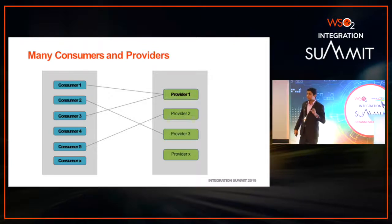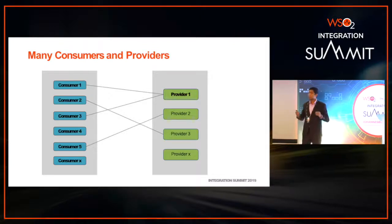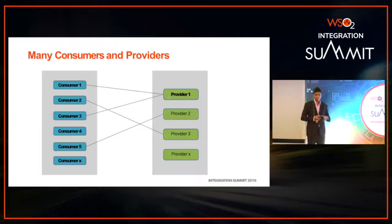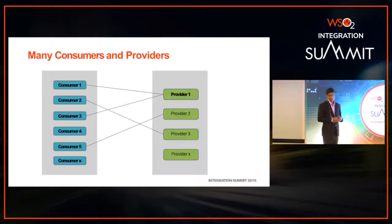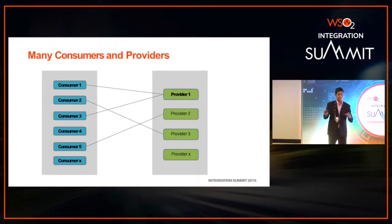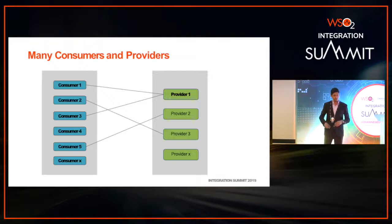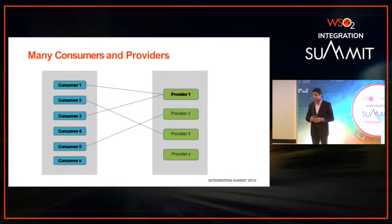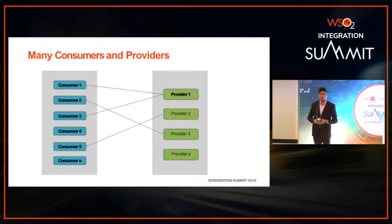Once you have your APIs in place, it will look like this: there will be multiple providers and multiple consumers interacting with each other. This doesn't look so bad — but what can go wrong?